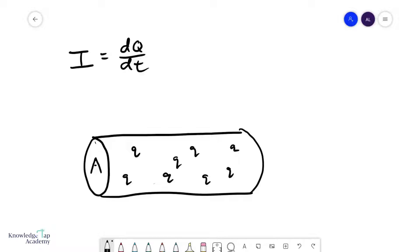In this video, we're going to discuss the microscopic model of a current. We have already learned that current is defined as dq/dt.